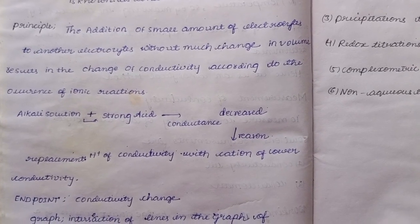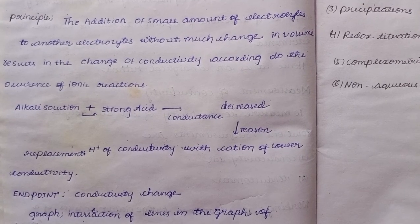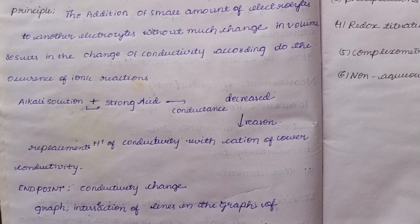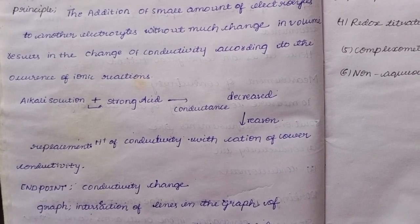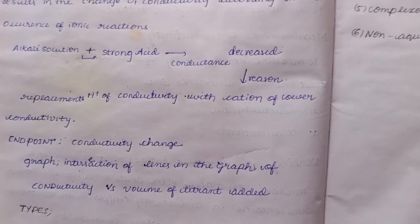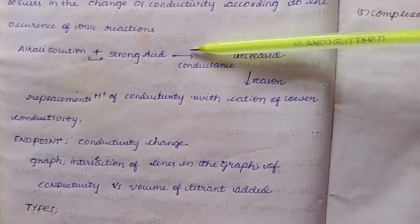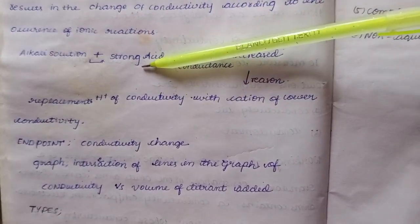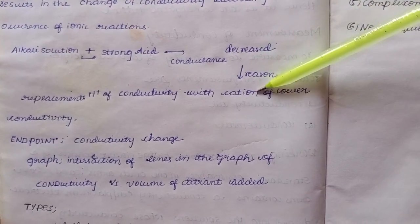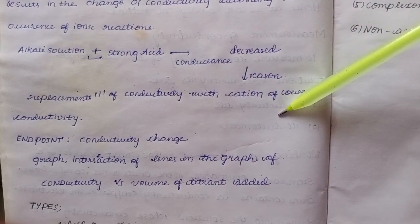When we add an electrolyte solution, conductivity changes due to ionic reactions involving cations and anions. For example, in a strong acid titrated with an alkaline solution, the conductance decreases. The reason is the replacement of highly conducting hydrogen ions with cations of lower conductivity from the alkaline solution.